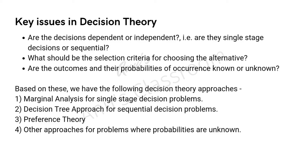What are the key issues in decision theory? Some key issues we face while taking decisions are whether our decisions are independent or dependent — that is, whether they are single-stage decisions or sequential. Is it that I take one decision and be done with it, or after taking the first decision do I have to take more and more decisions?